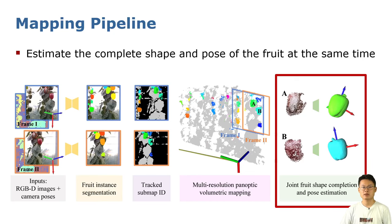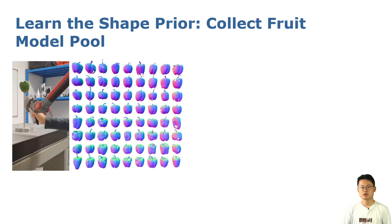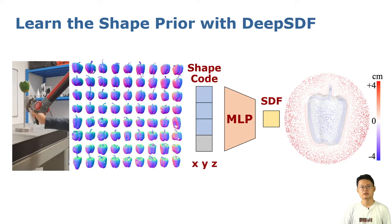Once we build the map, we can estimate the complete shape and pose of each fruit simultaneously. To do so, we first build a large database of accurate fruit models scanned by a handheld laser scanner in the lab. Then we train a DeepSDF model using the data pool to learn the prior knowledge of the fruit shape. The learned MLP network is able to predict the SDF value at an arbitrary position conditioned on a shape latent code.